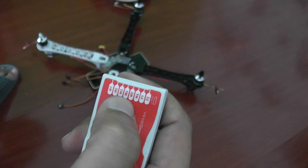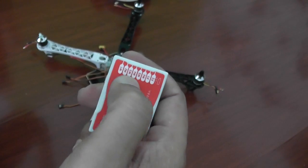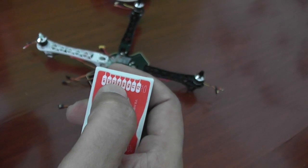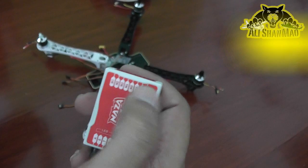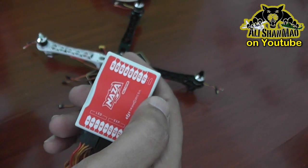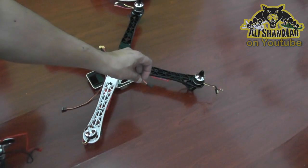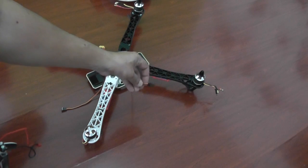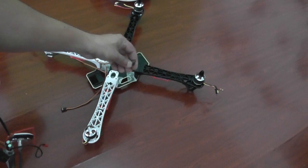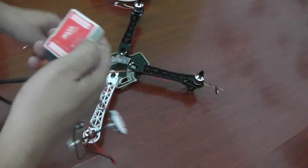Now on DJI NAZA you have M1 to M6, that is 6 ESCs can connect here. Remember, if you're using Opto ESCs without BEC, you can connect them directly to these ports without taking the red cable out. But if you're using the ESCs with BEC enabled, then you need to take the red cable out of them. If you see here this cable, I'm using it as it is. I did not take anything out because I'm using Opto ESCs without BEC. But if your ESC has a BEC, please remove the red cable from your ESC connector.